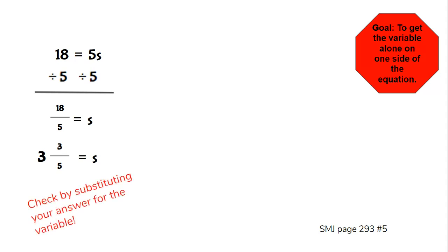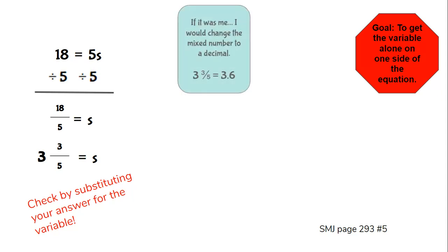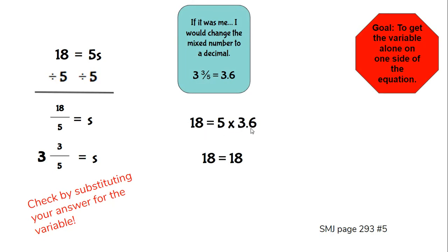We always have to check by substituting our answer for the variable. 18 equals 5 times 3 and 6 tenths — when I do the math, 5 times 3.6 equals 18. 18 equals 18 — that's how we know we're correct.